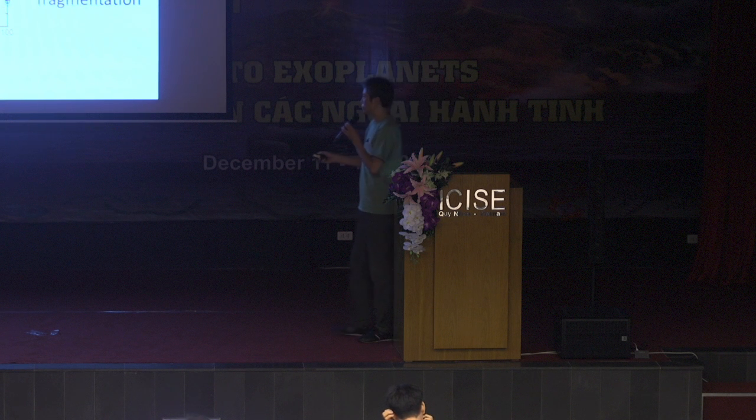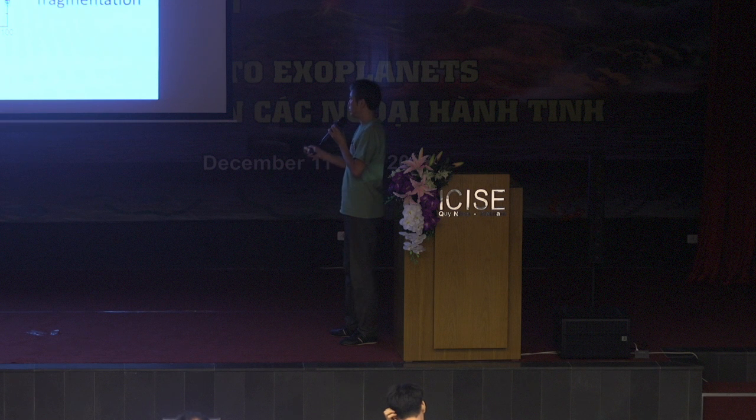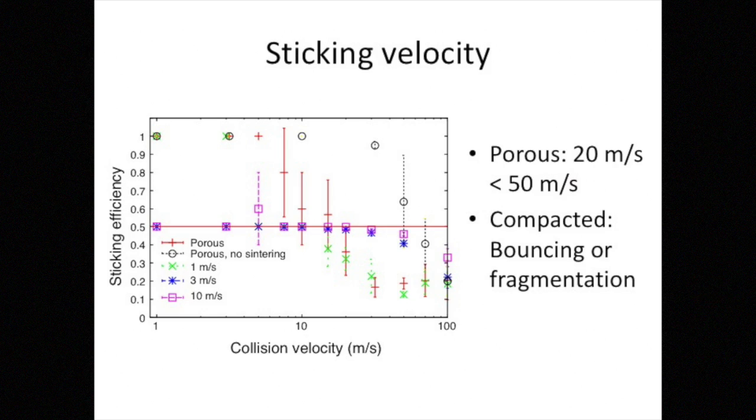And this panel summarizes my simulation. The x-axis is collision velocity, and the y-axis is the sticking efficiency, which means the ratio between the most massive fragments after collision to the initial total mass. So 1 means perfect sticking, and 0.5 means bouncing. And these black circles correspond to the non-sintered case. So in this case, the collision growth is possible at 15 meters per second.